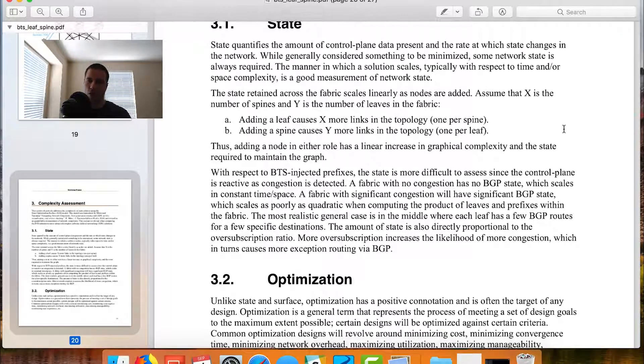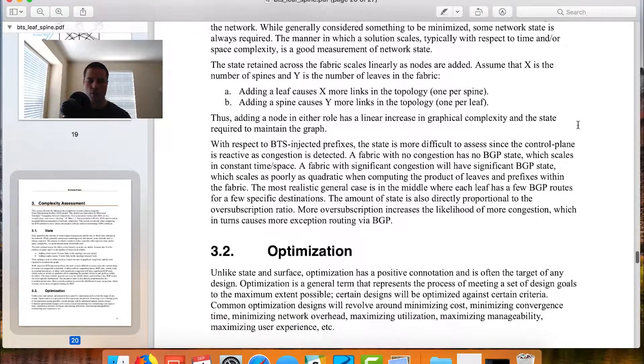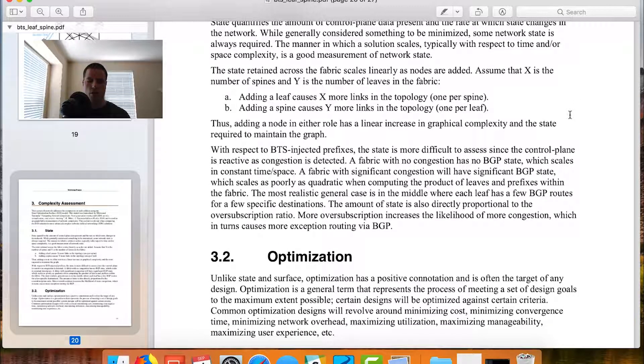Now, these assessments don't have to be long and complicated and painful. Typically, mine are only two to four pages. In these original white papers, they're typically very short, just because I didn't want to get too wordy with it. For more complex designs, oftentimes I'll include diagrams, as I did in the PowerPoint presentation, to better illustrate the point. But you can also keep it very simple and use this as a way to practice and hone your skills. The state retained across the fabric scales linearly as nodes are added. If X is the number of spines and Y is the number of leaves, then adding a leaf causes X more links. For every time we add a leaf, there's going to be X number of links. Adding a spine causes Y more links in the topology, one per leaf.